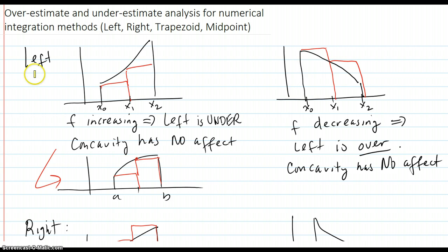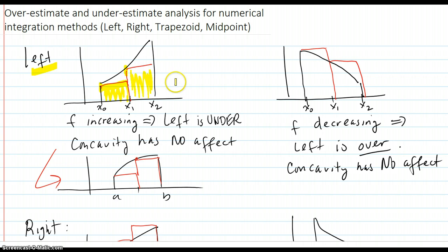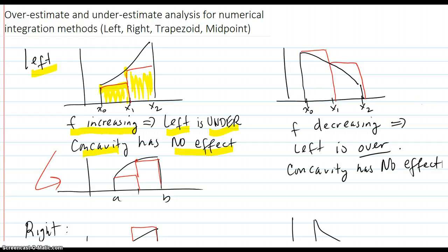For our left method, we have a two-sub-interval picture here. Notice that our left rectangles have the height of the left endpoint of the sub-interval. You can see that the rectangle area is underestimating the area under the curve. So if F is increasing, the left rectangle sum method is under. Concavity has no effect — you can see that even in this concave down picture, the left rectangles are still an underestimate.